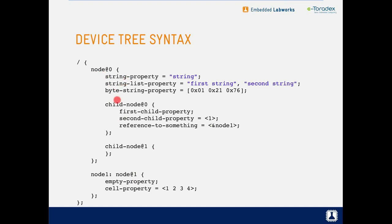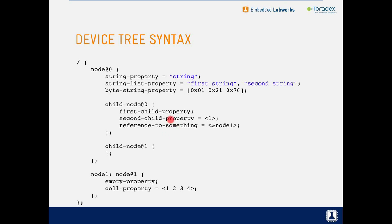There are several types of properties. A string property is enclosed in quotes. A list of strings is separated by commas. Byte array properties use square brackets. An unsigned integer is enclosed in angle brackets. A 'boolean' or flag property is declared with just the property name and no value — the device driver checks whether the property is present. Inside a node, we can also have child nodes and subnodes. That's the syntax of the device tree.